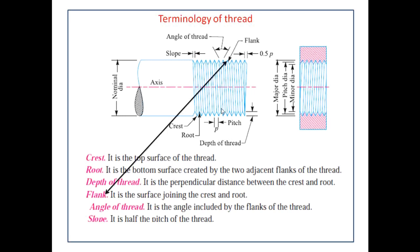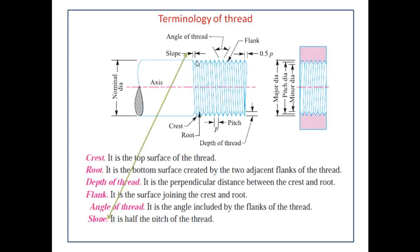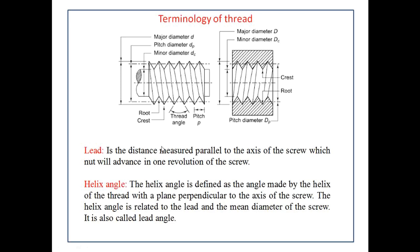The flank is the surface joining the crest and the root — on both sides. The angle of thread is the angle included by the flanks of the thread. Based on this angle, classification of threads is present. The slope is half the pitch of the thread. The lead is the distance measured parallel to the axis of the screw that the nut advances in one revolution of the screw.